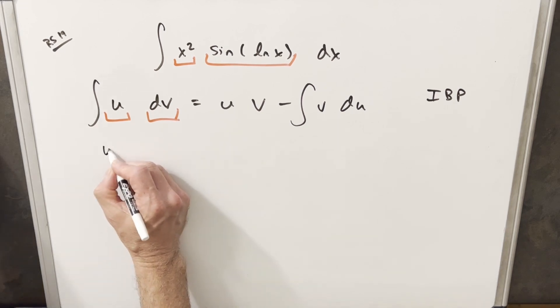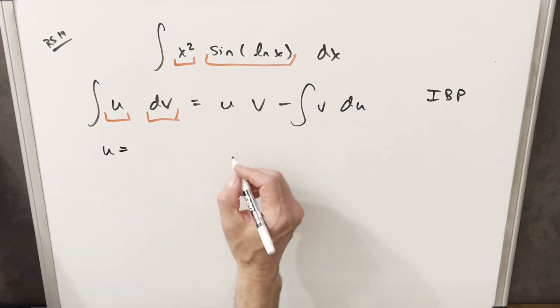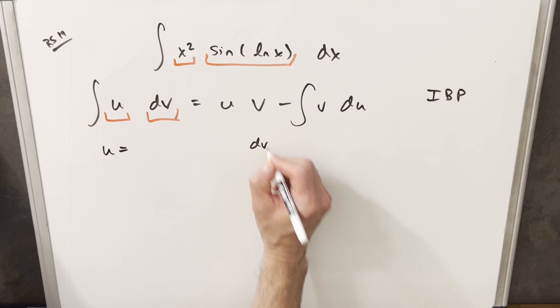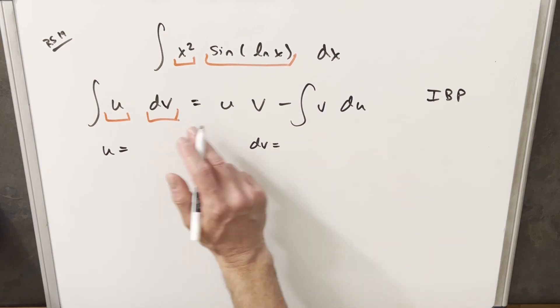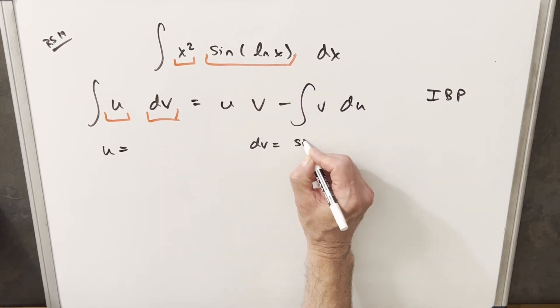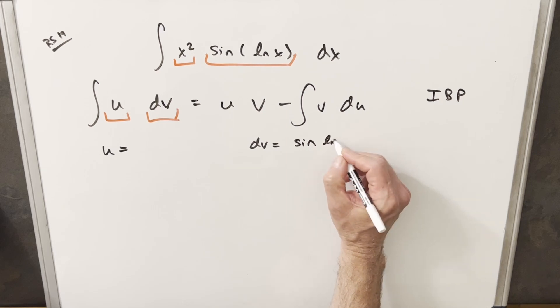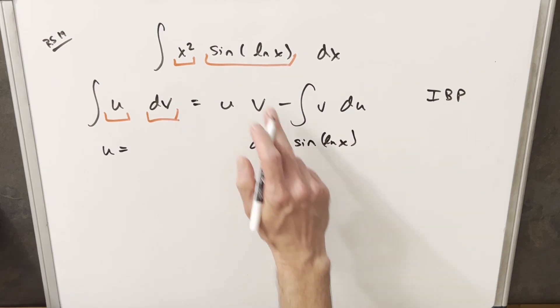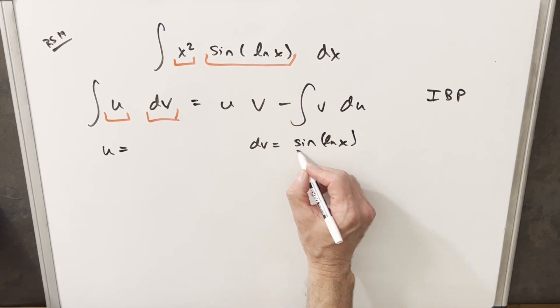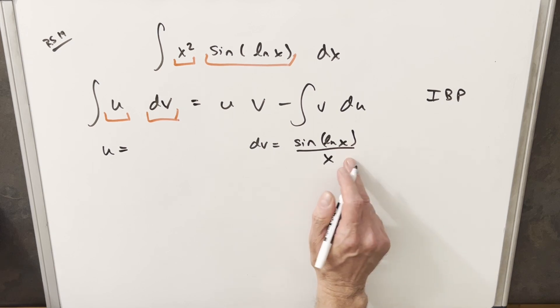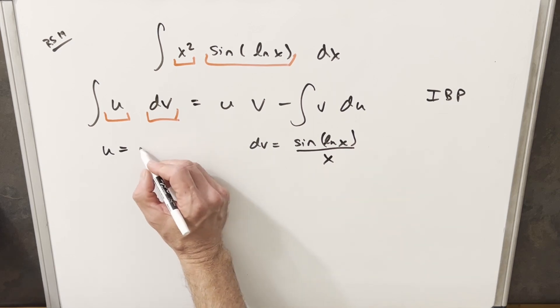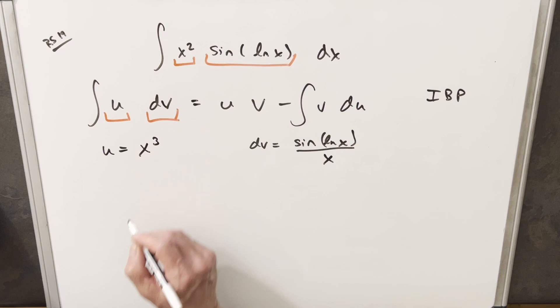Let's set this up with our u and our dv value. There's a couple ways you can do this, but what I actually want to do is something a little unusual. I'm going to choose to integrate, for my dv, I'm going to choose sine ln x. I'm going to write it like this, sine ln x over x, and then over here for u, I'm going to say this is x cubed.